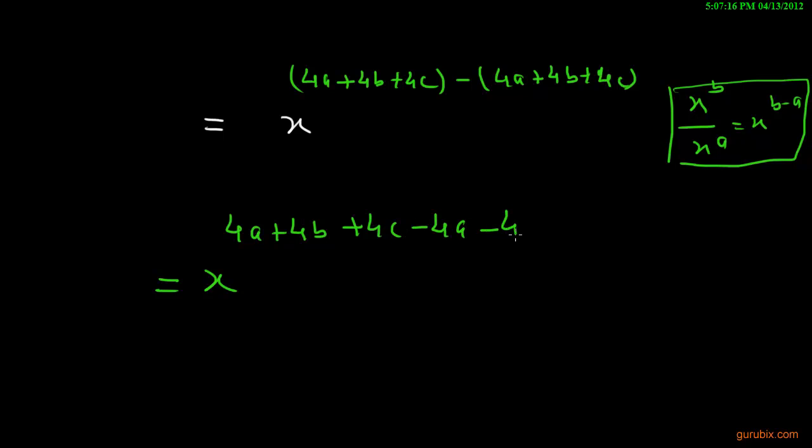It will be x raise to 4a plus 4b plus 4c minus 4a minus 4b minus 4c. Now we can cancel out these values. Then it will be x raise to 0, and that is equal to 1, and that is equal to right-hand side. Hence proved. Thank you.